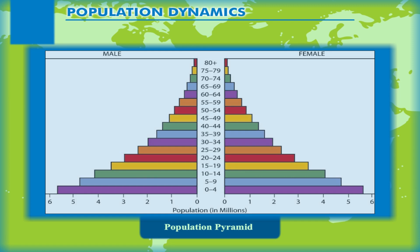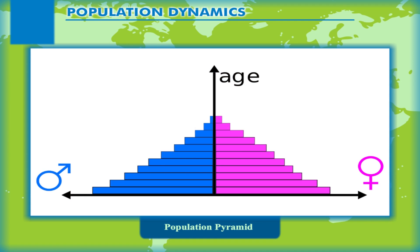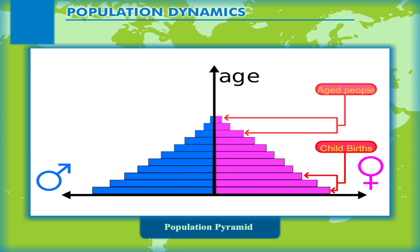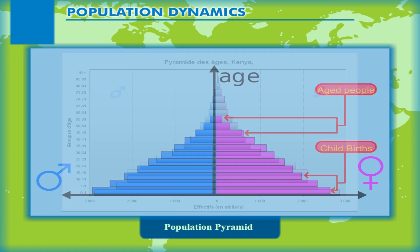The number of children below 15 years are shown at the bottom and reflect the level of births. The size and shape of the top shows the numbers of aged people above 65 years and is a reflection of the number of deaths.